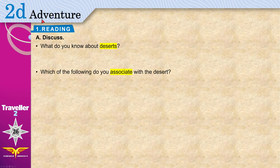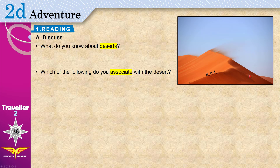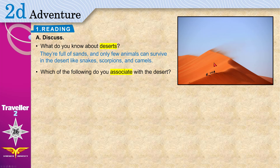Adventure is when you try something unusual or dangerous. Today we discuss: what do you know about deserts? This place is the desert. Deserts can be very harsh and very difficult to live in. This is why not many people live there. Not even many animals and plants can live there — only a few, like snakes, scorpions, and camels.